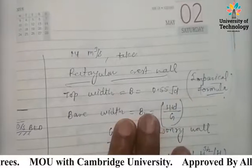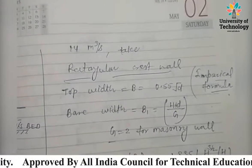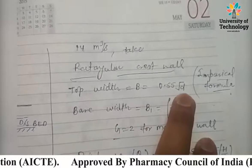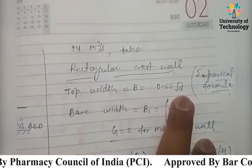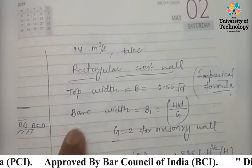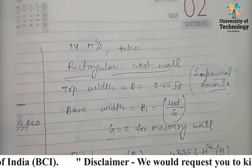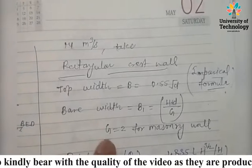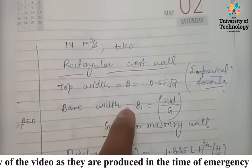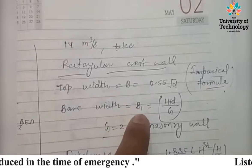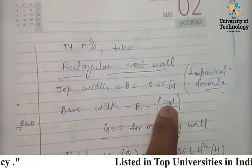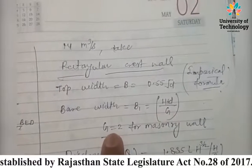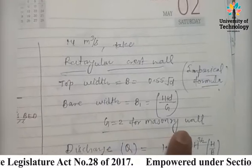This is an empirical formula — there's no derivation. You must remember: top width B = 0.55 √d. The base width, represented by capital V1, is calculated as (H + d) / G, where capital G is 2 for masonry walls — this is the specific gravity of the construction material.